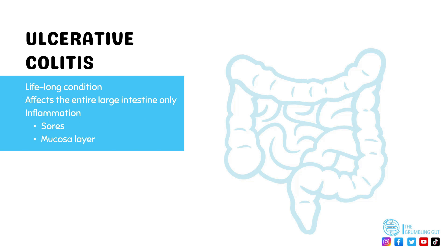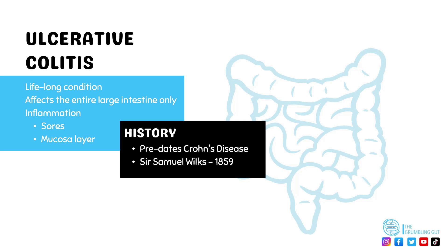Next, let's look at ulcerative colitis. In ulcerative colitis, it is most commonly the inner lining of the large intestine and the rectum that are affected with inflammation and ulceration. The inflammation causes sores, which leads to the bleeding seen as a symptom. It differs from Crohn's disease as ulcerative colitis only affects the large intestine, and the inflammation only affects one layer of the intestinal wall.